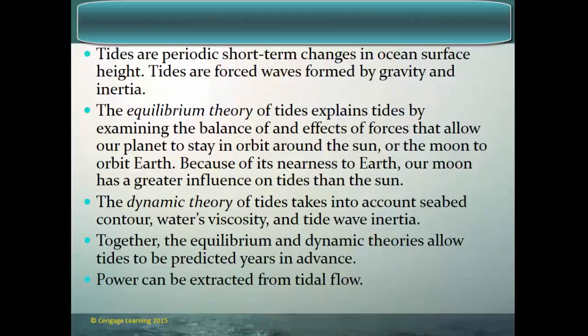Tides are actually waves — forced waves, forced by gravity and inertia — and they are the longest wavelength waves on the planet. They are essentially short-term changes in ocean surface height. The equilibrium theory of tides explains tides by examining the balance of forces that keep our planet in orbit around the Sun or the Moon in orbit around the Earth. Because of the Moon's nearness to Earth, it has a greater influence on our tides than the Sun. The dynamic theory also takes into account seabed contour, water viscosity, and inertia. Together, both theories allow tides to be predicted years in advance.